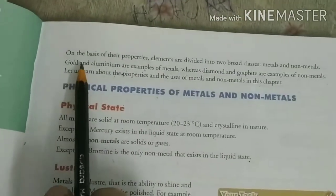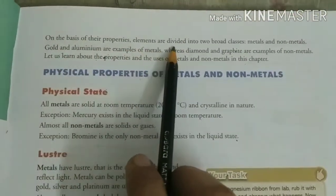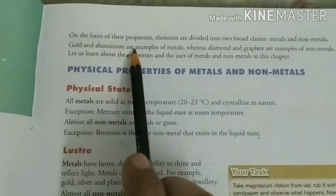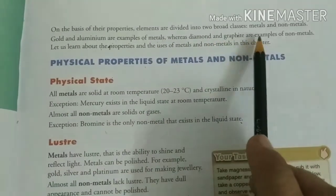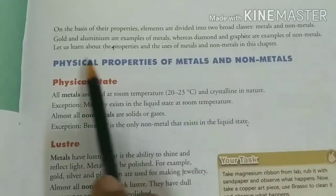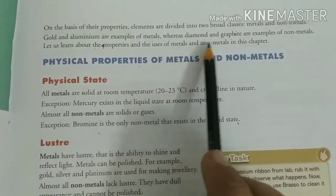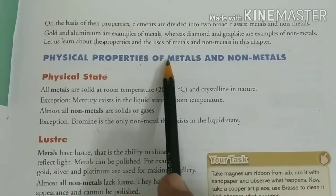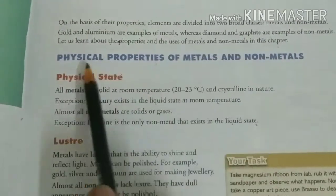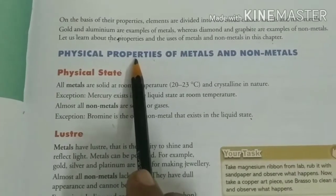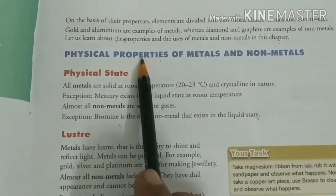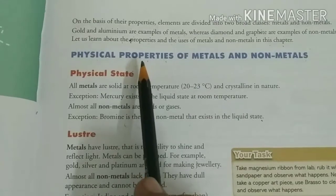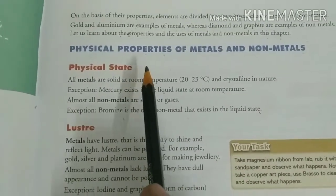Let us read the chapter now. On the basis of their properties, elements are divided into two broad classes: metals and non-metals. Gold and aluminium are examples of metals, whereas diamond and graphite are examples of non-metals. We will learn about the properties and uses of metals and non-metals in this chapter. First of all we will study about the physical properties. Physical properties are the properties we can study only by observing the elements without involving any chemical reactions — like physical state, density, and luster.